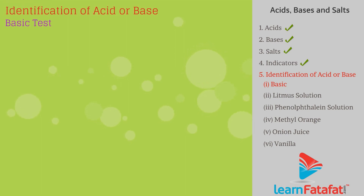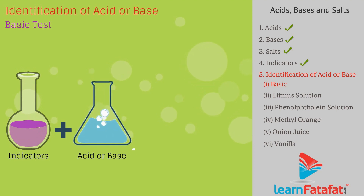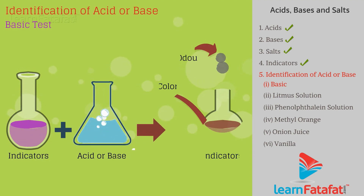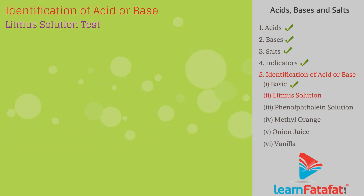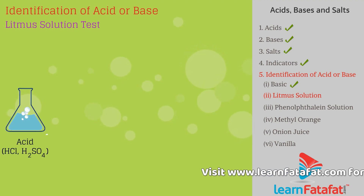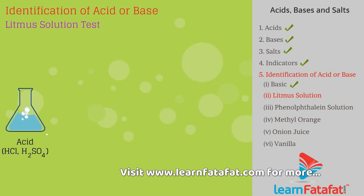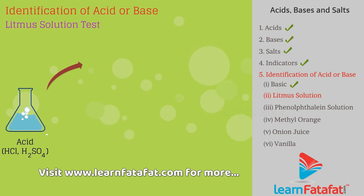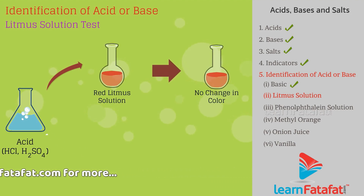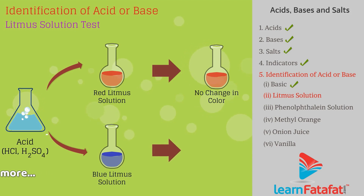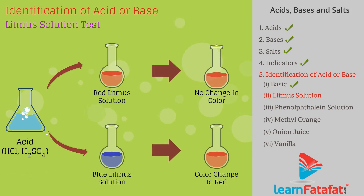Indicators exposed to acids or bases show changes in terms of color or odor. Litmus solution test: In acidic solutions such as hydrochloric acid (HCl), sulfuric acid (H2SO4), and acetic acid (CH3COOH) — red litmus shows no color change; however, blue litmus turns red.